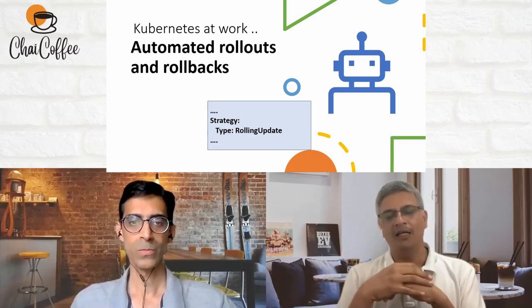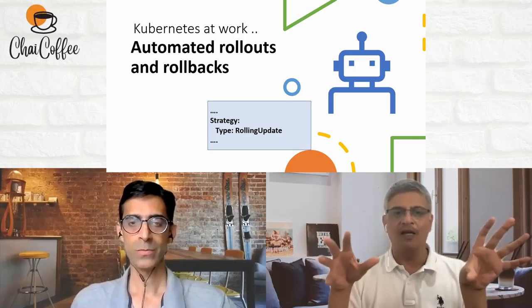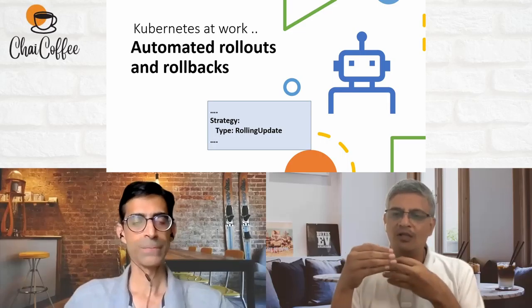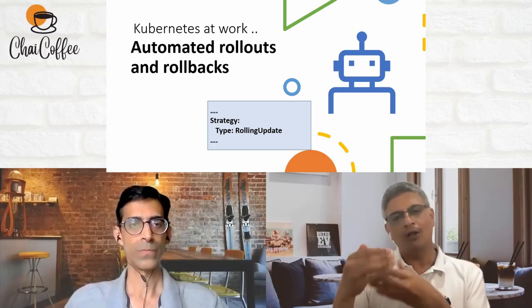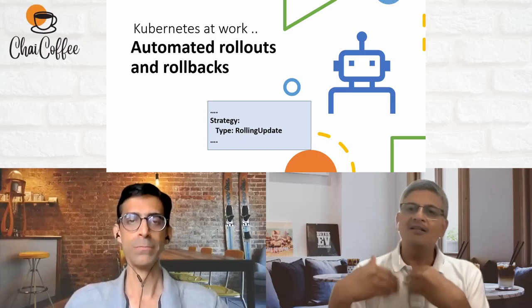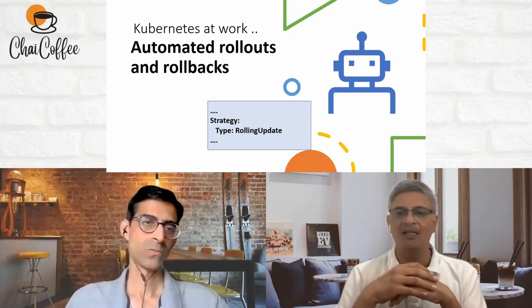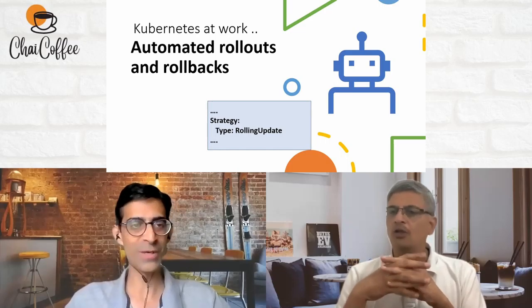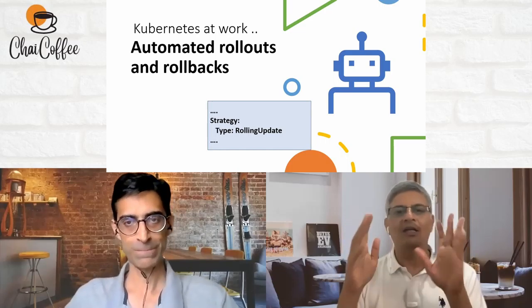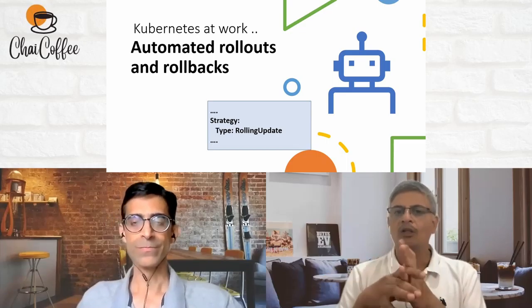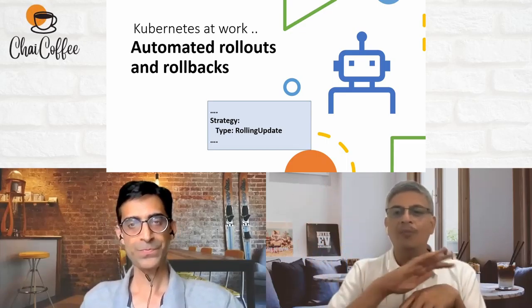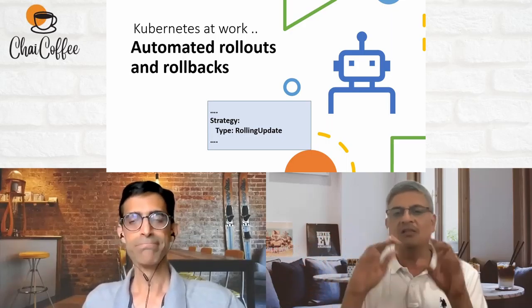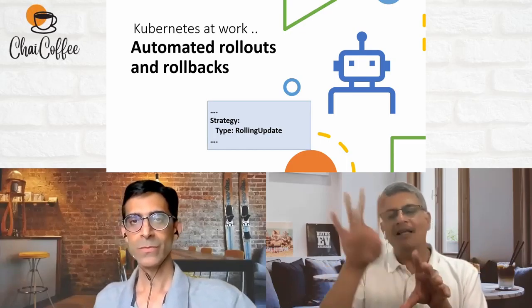What a DevOps engineer does is create a description file — using what are called Helm charts — and puts all the instructions in a declarative fashion, then submits to Kubernetes to achieve the desired state. No scripts need to be written. You don't have to bash-script anything. You just give a declarative definition to Kubernetes and it takes care of implementing your instructions.